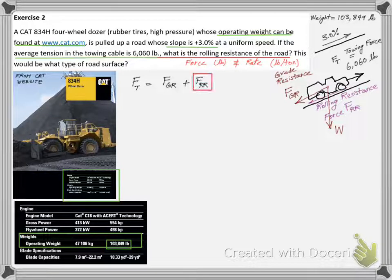From equilibrium, we can state that the towing force FT equals FGR plus FRR. We are after FRR.